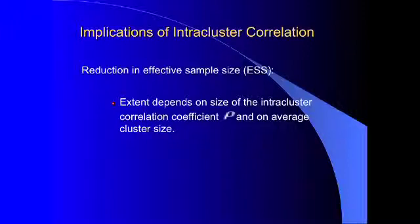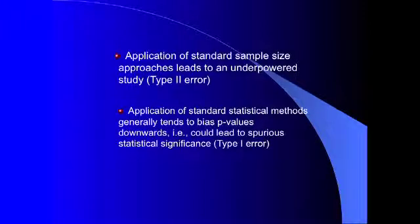The implication of people in the same cluster being more similar than people in different clusters is essentially a reduction in effective sample size that depends on the size of the intra-cluster correlation coefficient and the average cluster size. The intra-cluster correlation coefficient is simply the ordinary correlation between any two people's responses in the same cluster. If you ignore it in sample size calculations, you will get an underpowered study — an elevated type 2 error. And if you apply standard statistical methods, you will generally have the risk of spurious statistical significance — an elevated type 1 error.